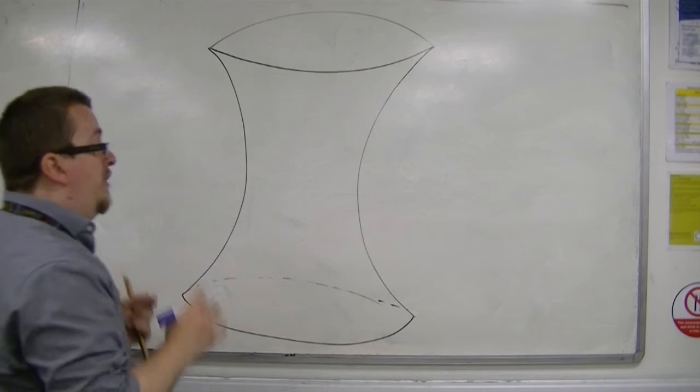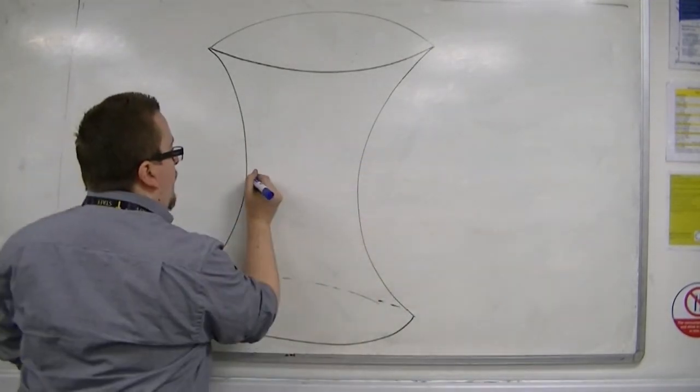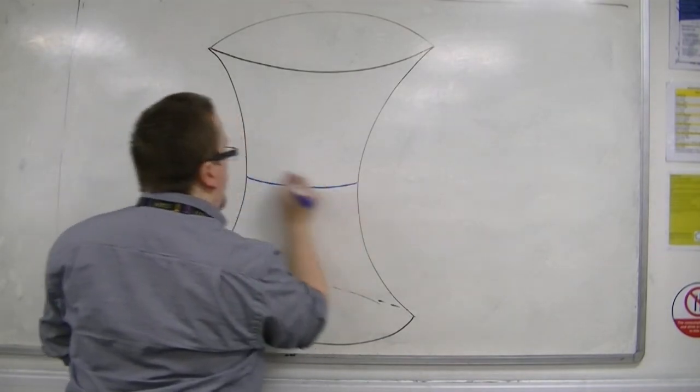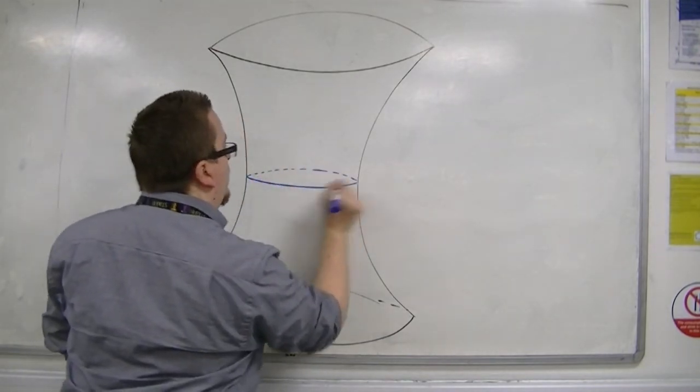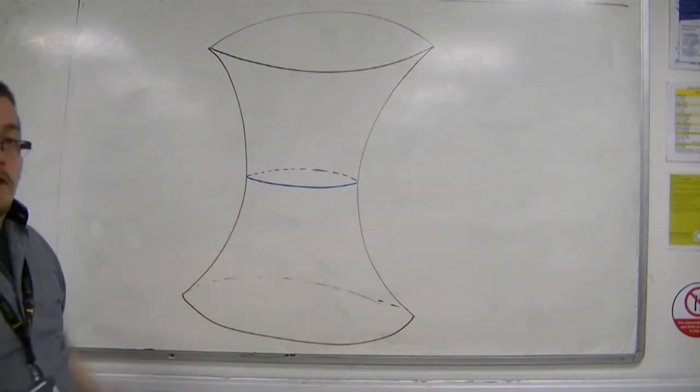So for example, if you cut it right down the middle, then what you'll find is that you cut a perfect circle. So if you cut it at any point, you will get a circle.